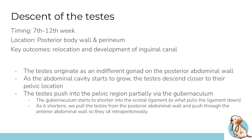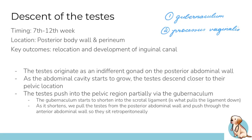Before we get into the descent, we need to talk about two really important embryological structures. The first one is the gubernaculum, and the second is the processus vaginalis. The gubernaculum is basically a fibrous tissue that helps the testes descend. It starts off long and then shortens, and this shortening pulls the testes from the posterior abdominal wall all the way into the scrotum.